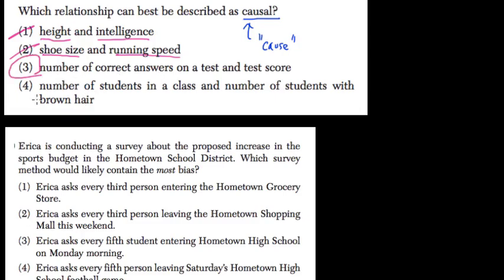But let's look at number four: number of students in a class and number of students with brown hair. Well, there might be a correlation there — there might be a lot of students in your class and they all might have brown hair. However, just having students in your class doesn't mean that they will automatically have brown hair.